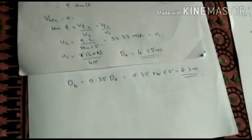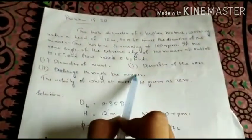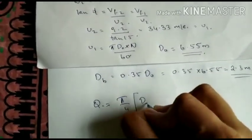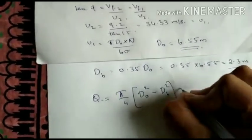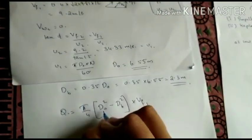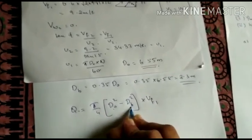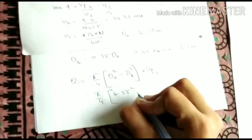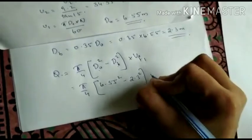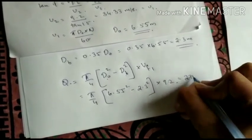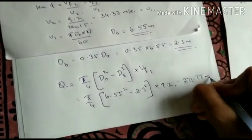Now discharge through the turbine is the third part of the question. Discharge through the runner. So Q is equal to pi by 4 into D0 square minus dB square into VF1. So all these are given. This is the diameter of the hub, diameter of the runner and this is the inlet velocity. So pi by 4 into 6.55 square minus 2.3 square into 9.2. And you will get it as 271.77 meter cube per second.